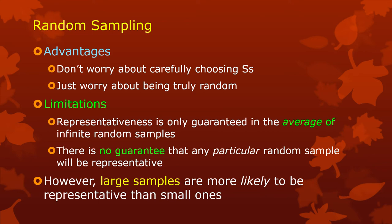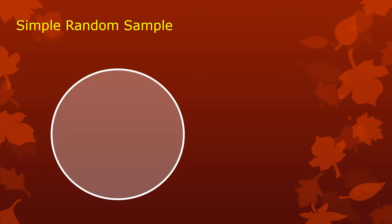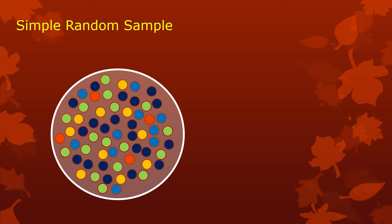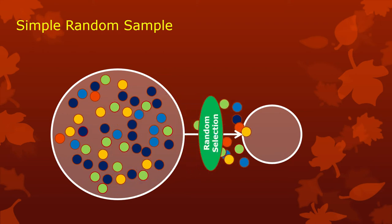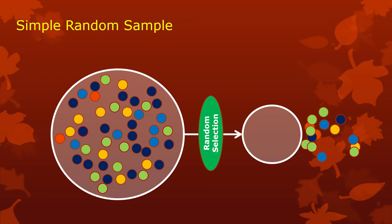We can help a lot by figuring out how big our samples should be to have a pretty good chance of being representative. Large samples are much more likely to be representative than small ones, and large doesn't have to be gigantic — you don't need half the population if you're using random sampling. In a simple random sample, you draw a sample of n observations randomly from the population. The definition of random selection is that everybody in the target population has an equal chance of being in the sample.